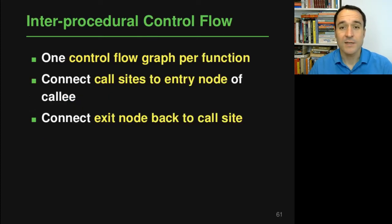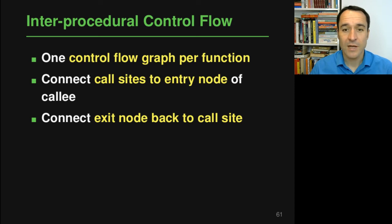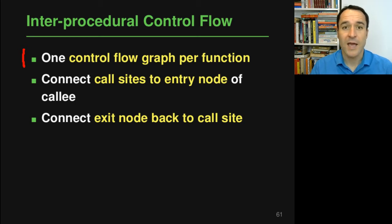So how can an inter-procedural data flow analysis work? For an intra-procedural analysis we looked at the control flow graph, so the logical next step for an inter-procedural data flow analysis is to look at an inter-procedural control flow graph. This graph is essentially the control flow graph for each individual function, and then we connect the different control flow graphs by adding edges for all the calls and returns.